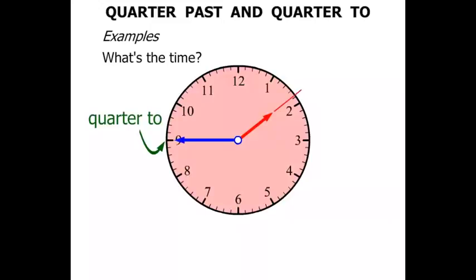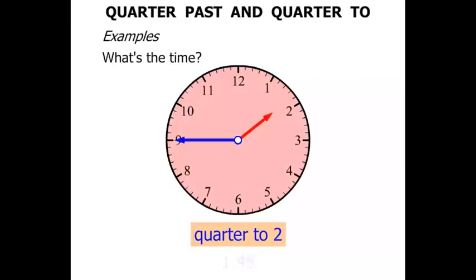And we've got to see, look at the hour hand. What is it getting close to? It's getting close to two o'clock there. So we say it's quarter to two. And quarter to two in digital form is 1.45.